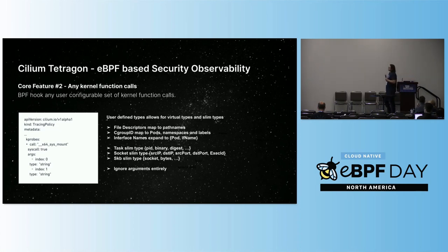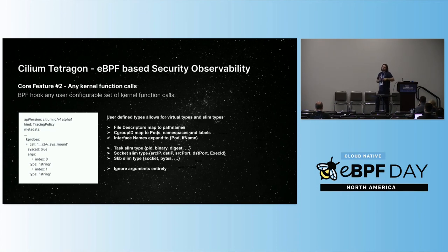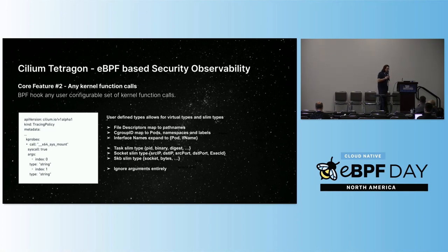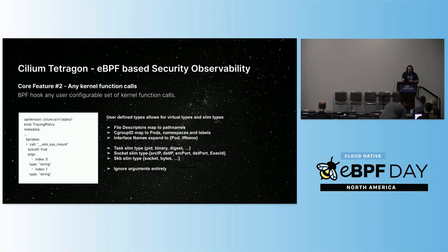The other interesting capability is virtual types — or slim types as we call them. Do you really care what the file descriptor number of an open call is? Probably not: if I tell a security operator in a multi-cluster environment that it opened file descriptor five, they have no idea what that means. So we take the file descriptor and put the path name in there instead — now in your database you have the path name, which is much more useful. Same with cgroup IDs: operators care about labels and namespaces. And for a task structure, rather than printing bytes of raw data, you print just what you care about — it's more performant and more useful.